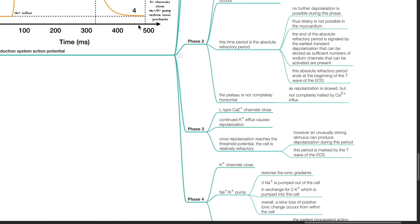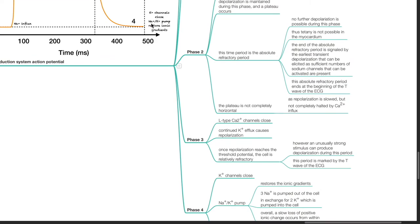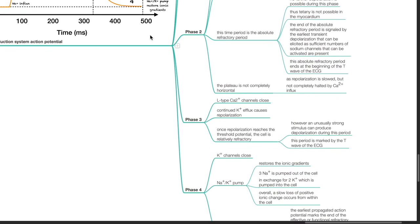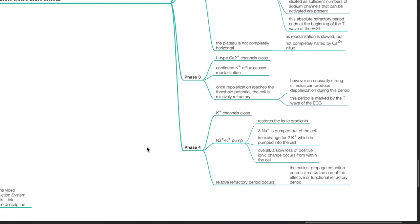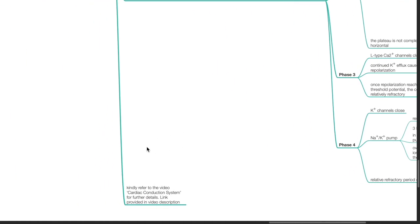During phase 4, potassium channels close. The sodium-potassium pump restores the ionic gradients. 3 sodium is pumped out of the cell in exchange for 2 potassium, which is pumped into the cell. Overall, a slow loss of positive ionic charge occurs from within the cell. Relative refractory period occurs. The earliest propagated action potential marks the end of the effective or functional refractory period. You can refer to the video Cardiac Conduction System for further details.